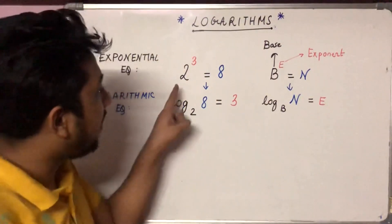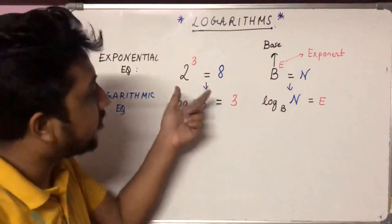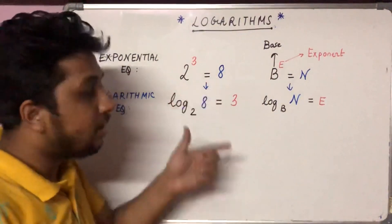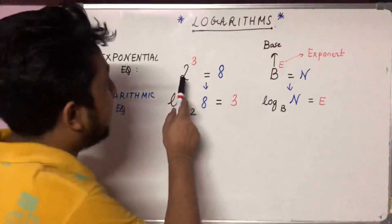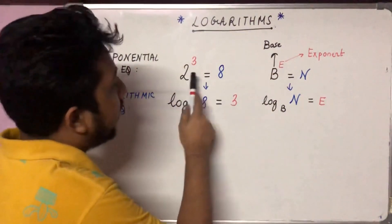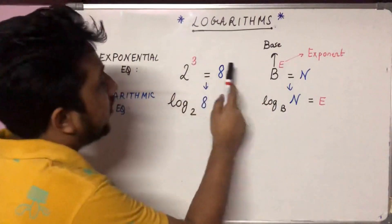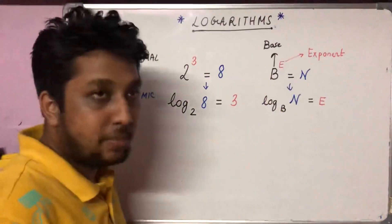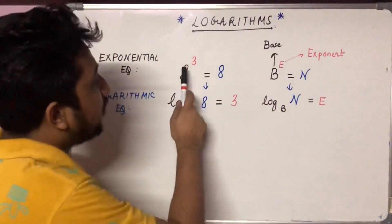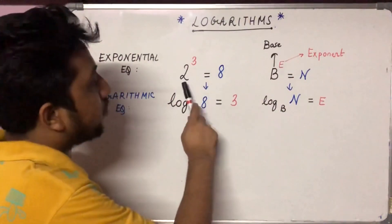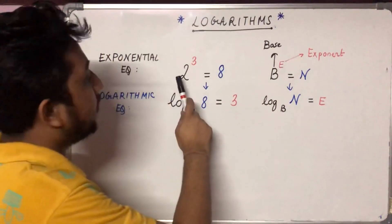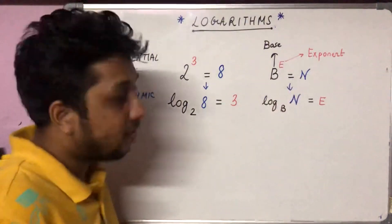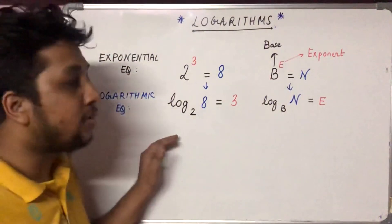Two to the power three equals eight — this is called an exponential equation. Any equation of this type is called an exponential equation. There is a base, a power which is called the exponent, and the other side is a number. So the general form is: base, exponent, equals a number.